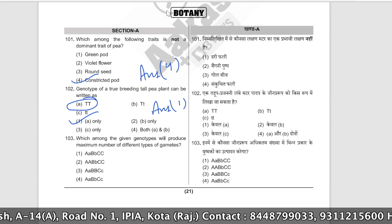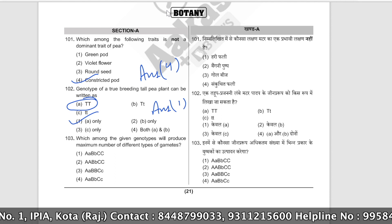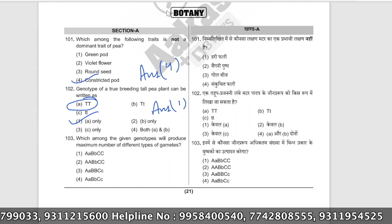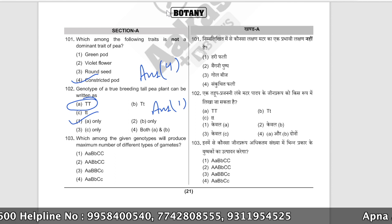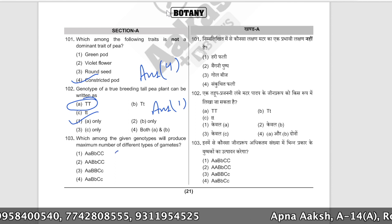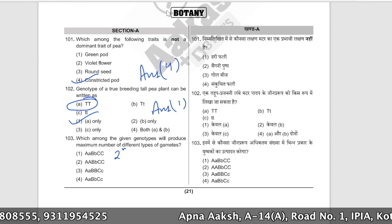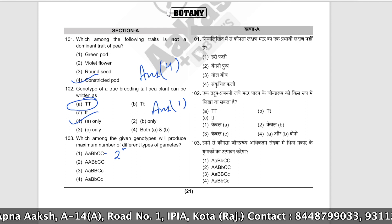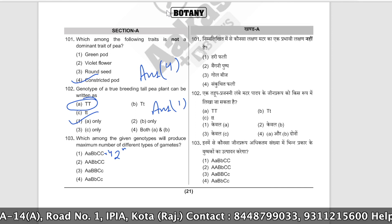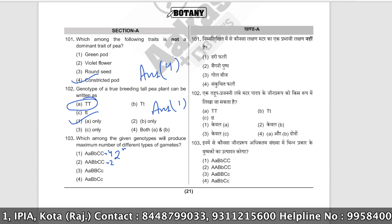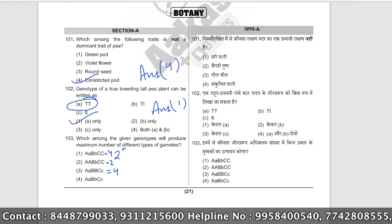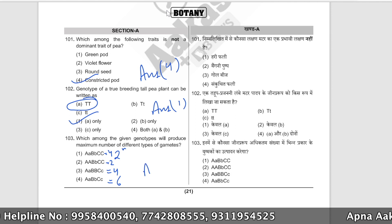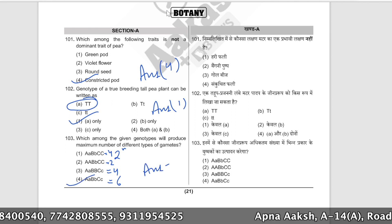Which among the given genotypes will produce the maximum number of different types of gametes? The more heterozygous pairs there are, the more gamete types are produced. The formula is 2 to the power n, where n is the number of heterozygous pairs. For 2 heterozygous pairs: 4 gametes; for 1: 2; and for 3 heterozygous pairs: 2³ = 8. The correct answer is option number four.